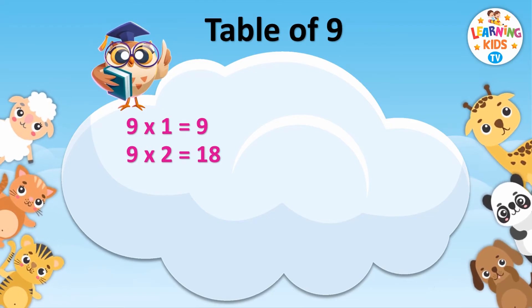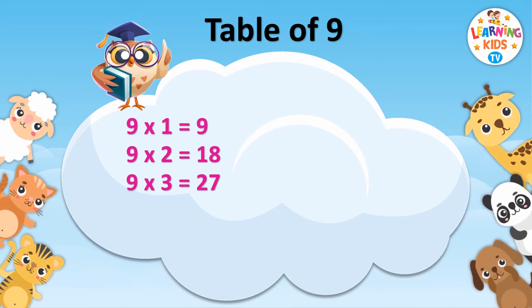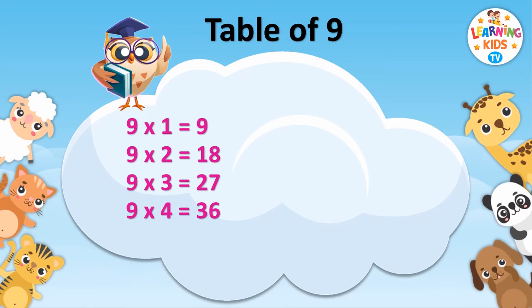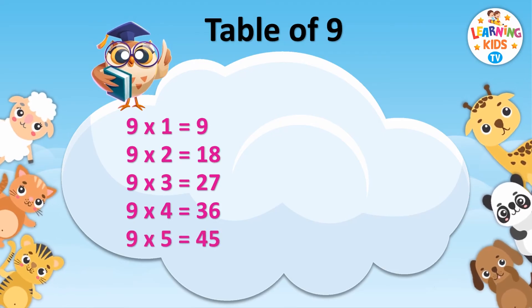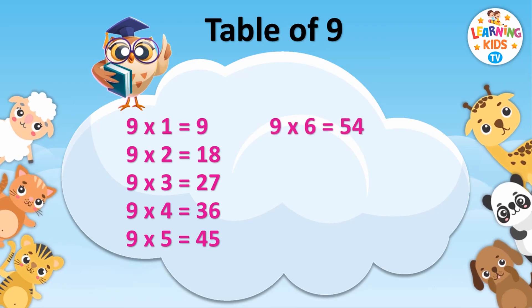Nine threes are twenty-seven. Nine fours are thirty-six. Nine fives are forty-five. Nine sixes are fifty-four.